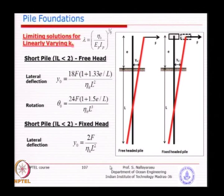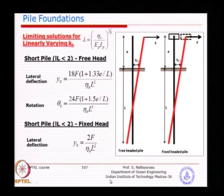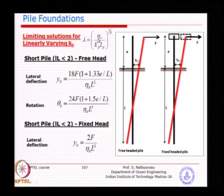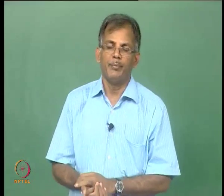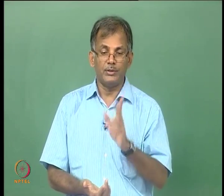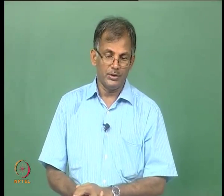So we have 8 cases total: 4 cases for constant KH value and 4 cases for varying KH value, represented in terms of eta H. API gives values of eta H for varying modulus for most sandy materials, though they use a different symbol, so care is needed.